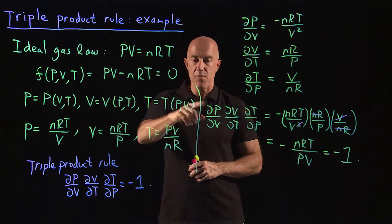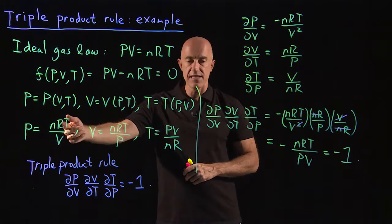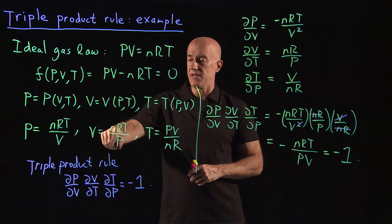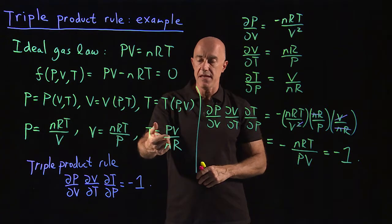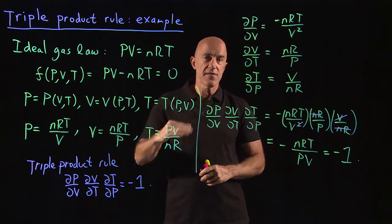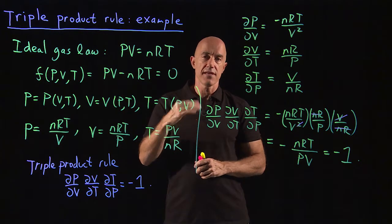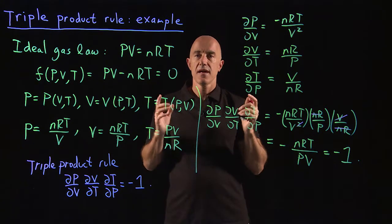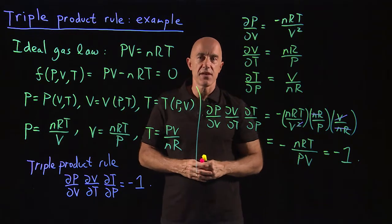The partial derivative of P with respect to V has a meaning that you keep T fixed. The partial derivative of V with respect to T has a meaning that you keep P fixed. That's a different animal than a function of a single variable and a normal derivative. I'm Jeff Chasnoff. Thanks for watching and I'll see you in the next video.